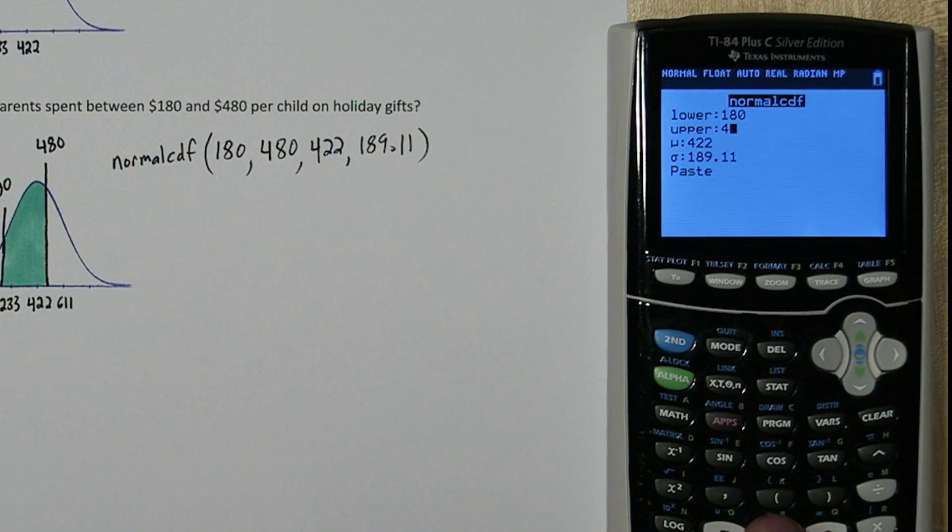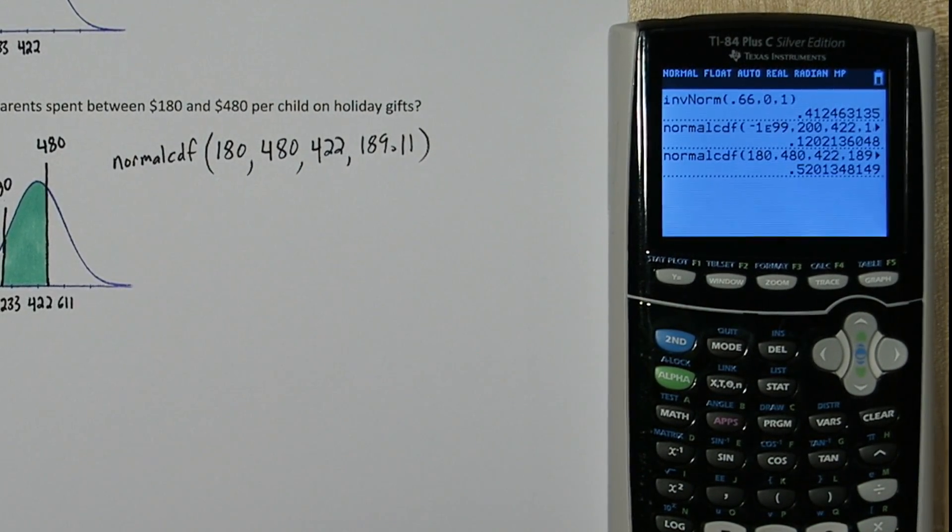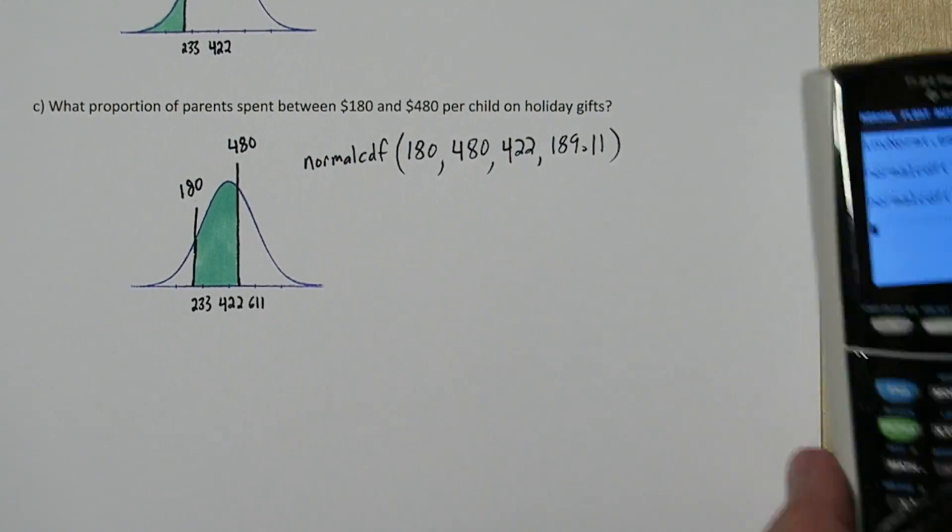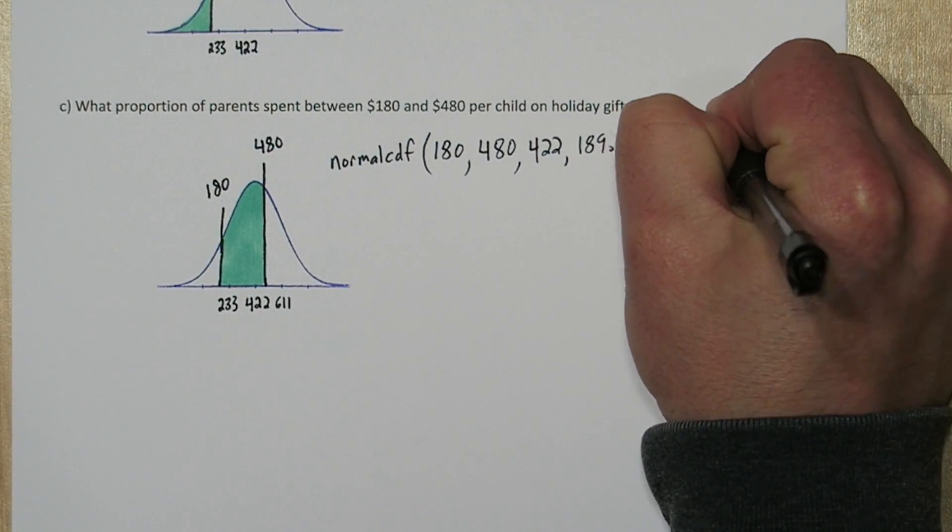Upper limit, 480. Leave our mean and standard deviation. And there's our proportion, about 0.5201.